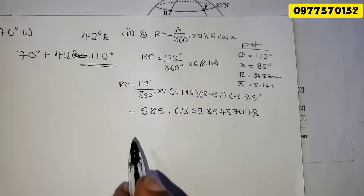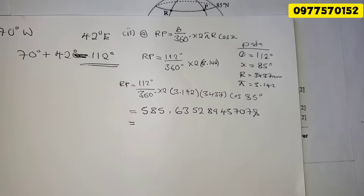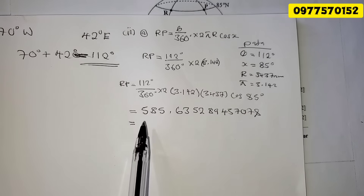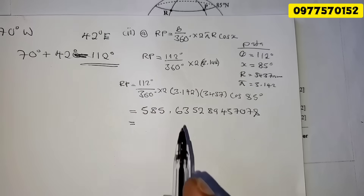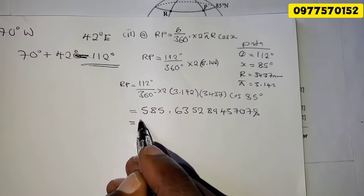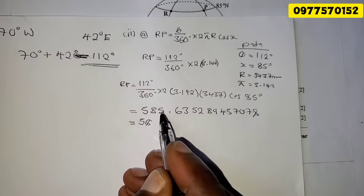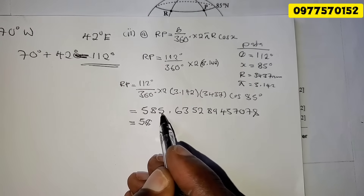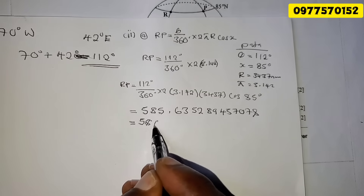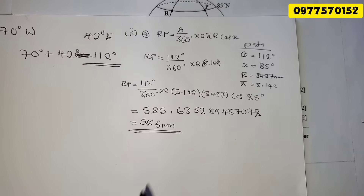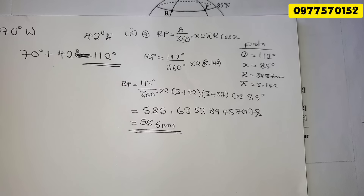The result is approximately 585.66. Since the degree of accuracy is not specified, we round to three significant figures. We have 5, 8, 5 — the digit after the third significant figure is greater than 5, so we round up, giving 586 nautical miles. That is the answer.